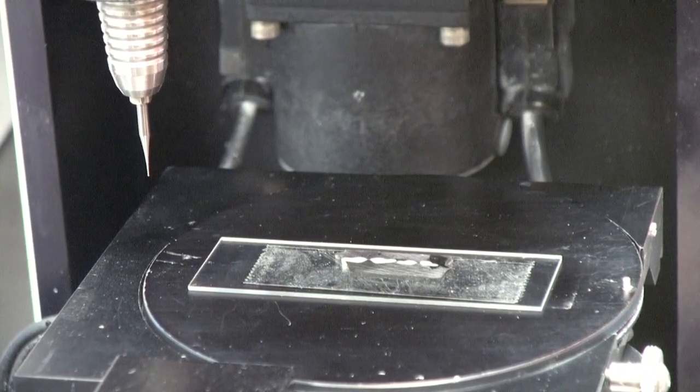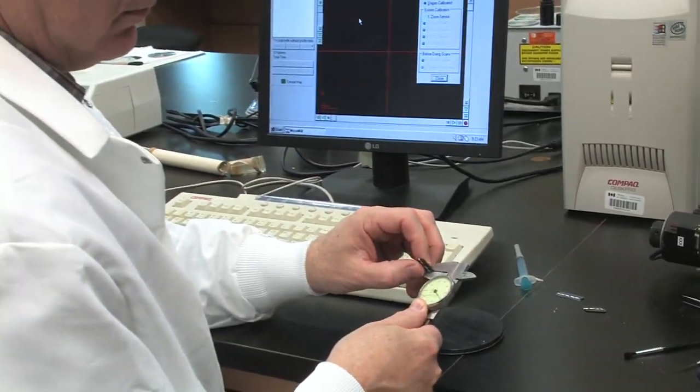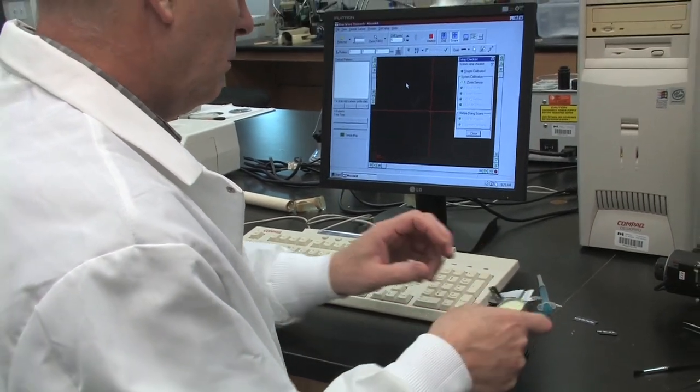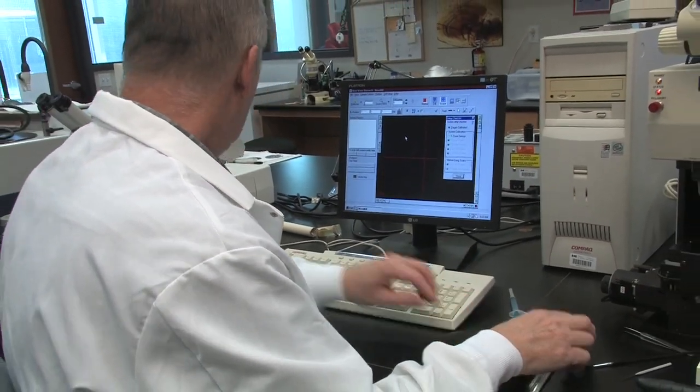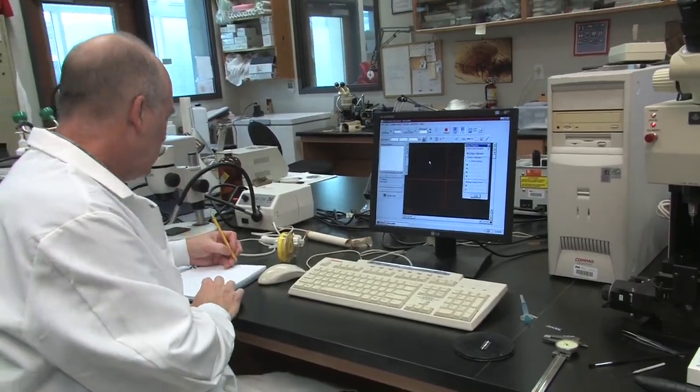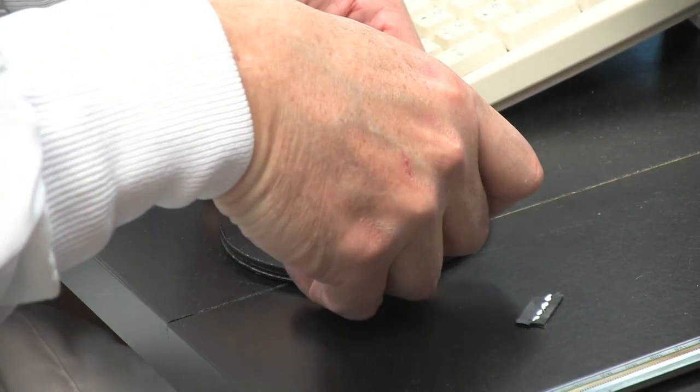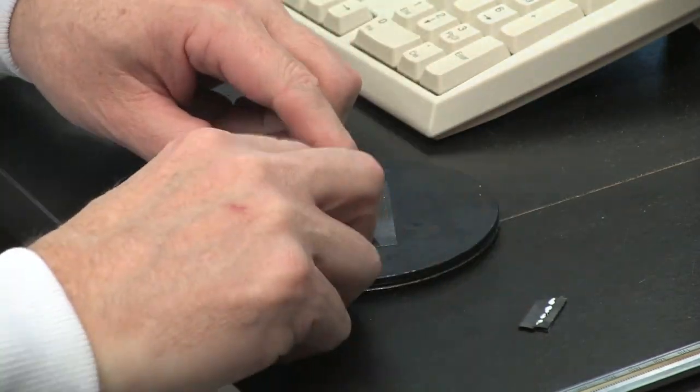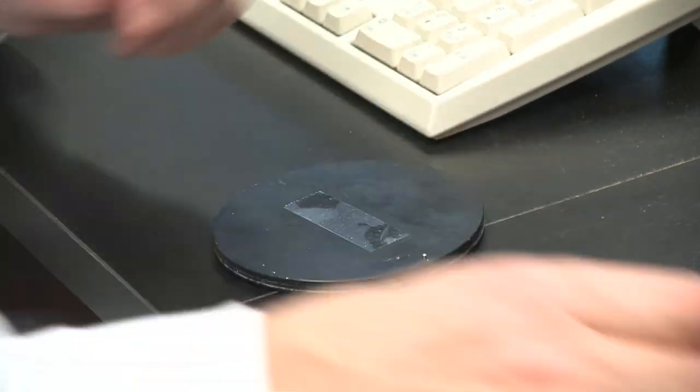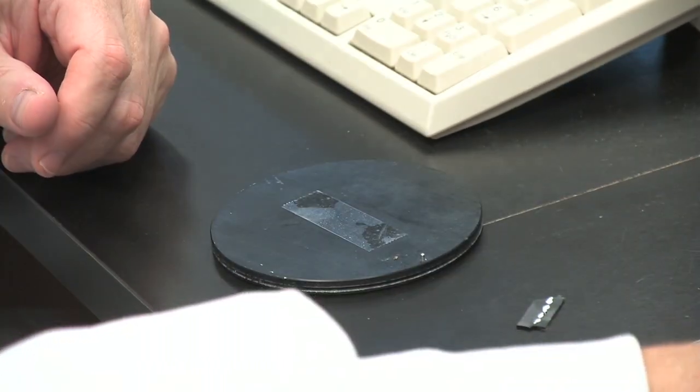At this point, you should attach your sample to the sample plate. Measure the thickness of your sample with a micrometer and record. Set up your sample on one of the black circular stage plates from the micromill. Use two-sided tape to secure a glass slide to the stage plate.